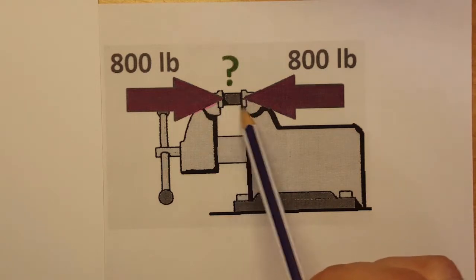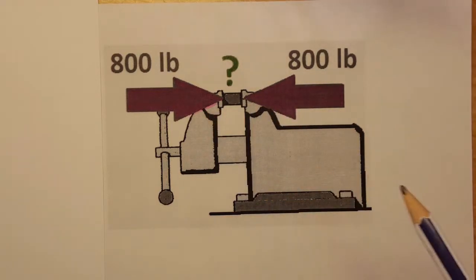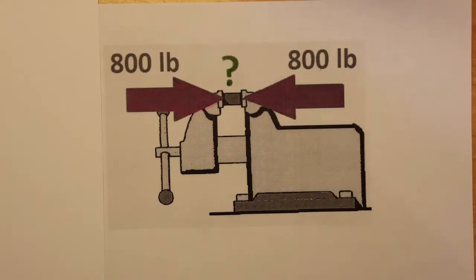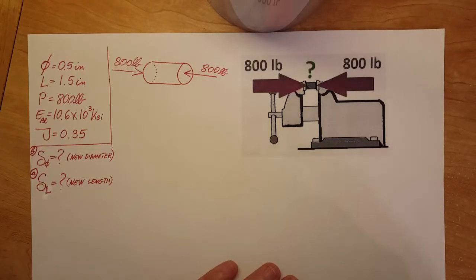It's placed inside between the jaws of this vice and it's squeezed until the axial load on it will be 800 pounds. They want us to determine the decrease in its length and the change in its diameter.